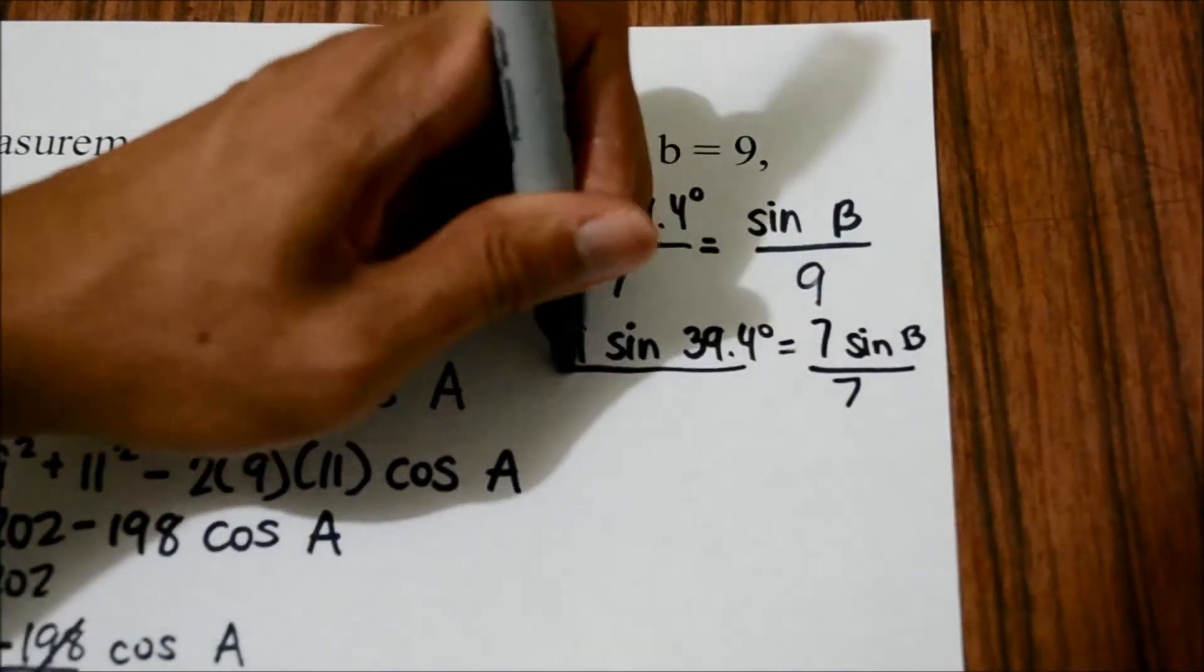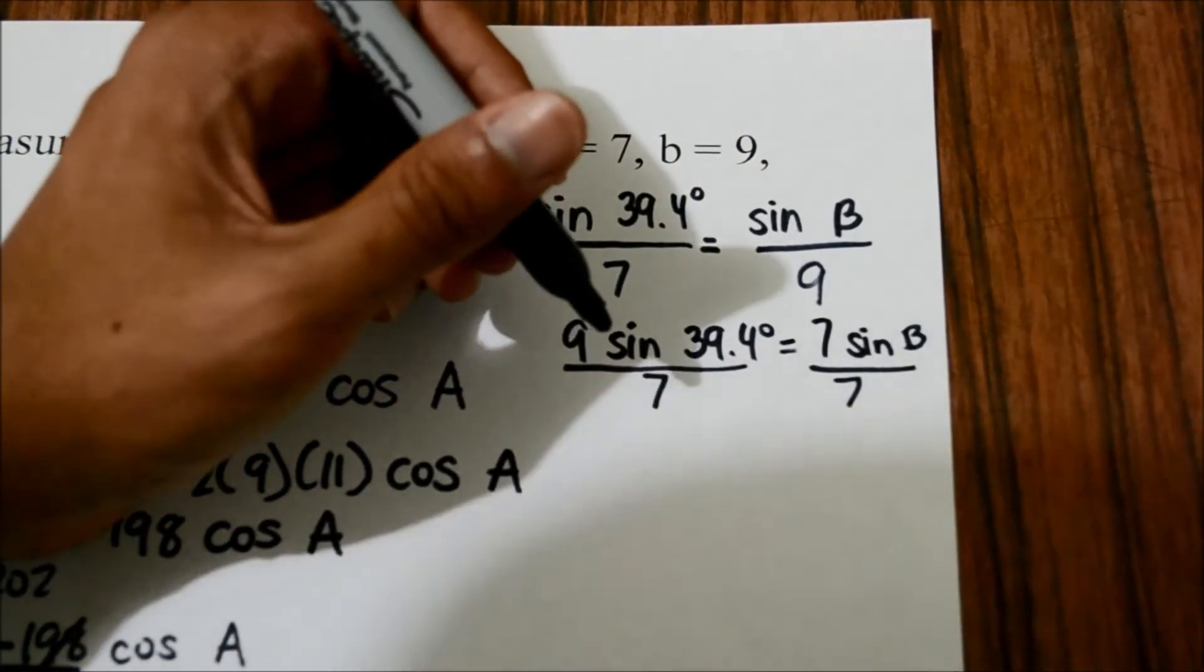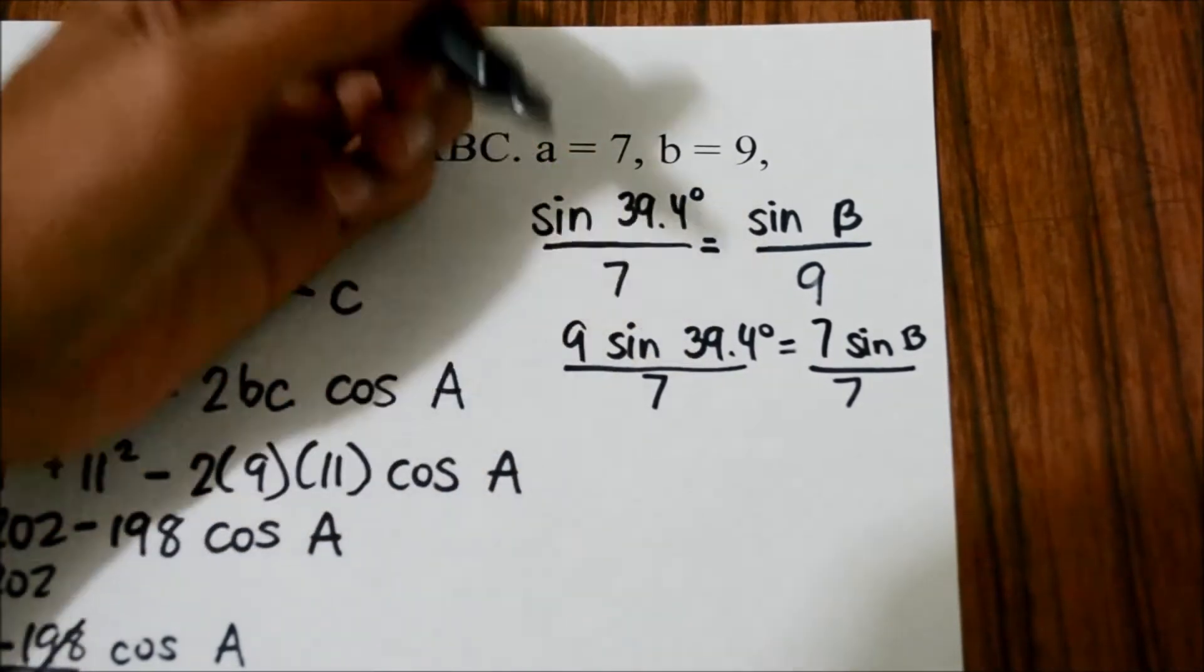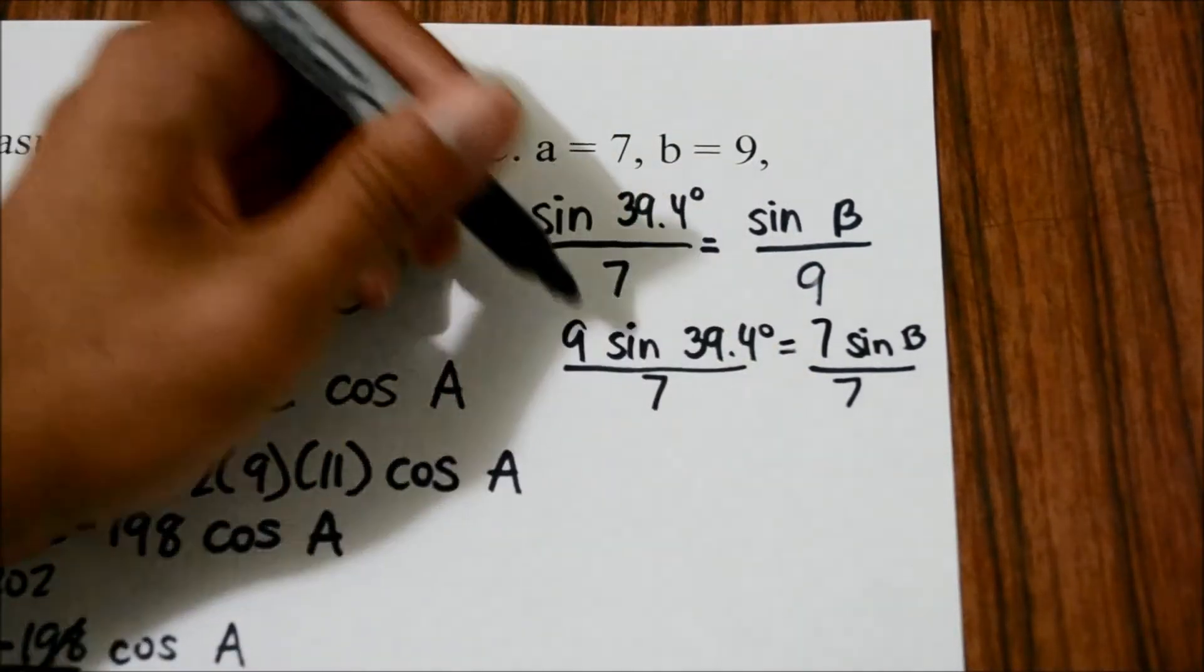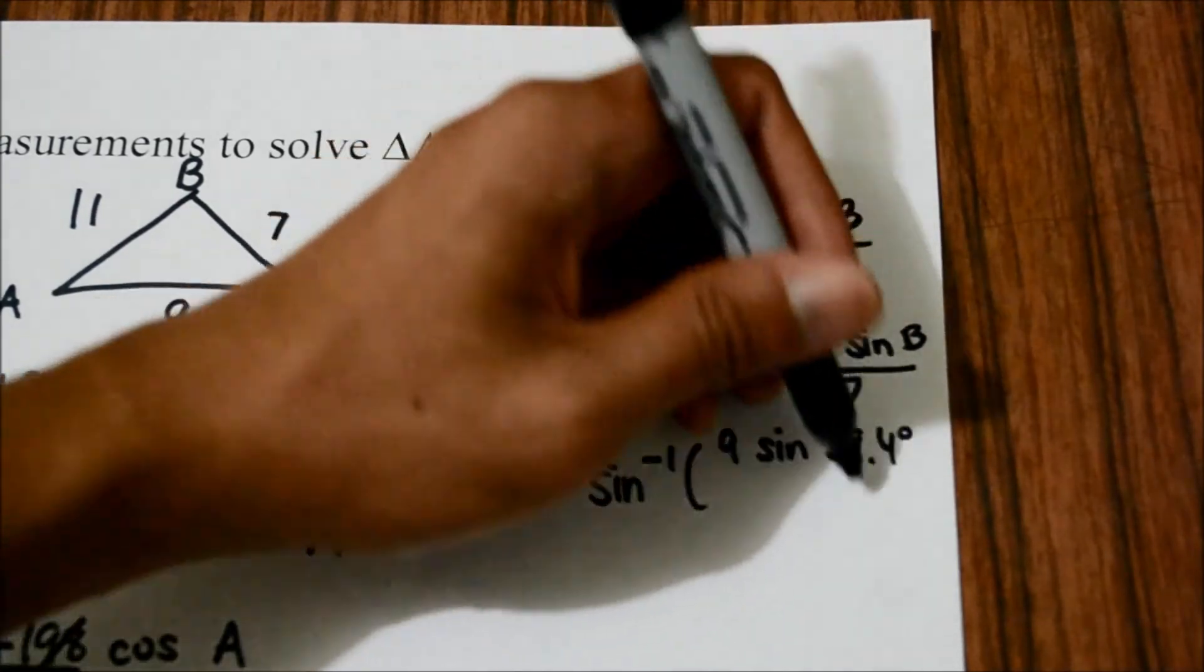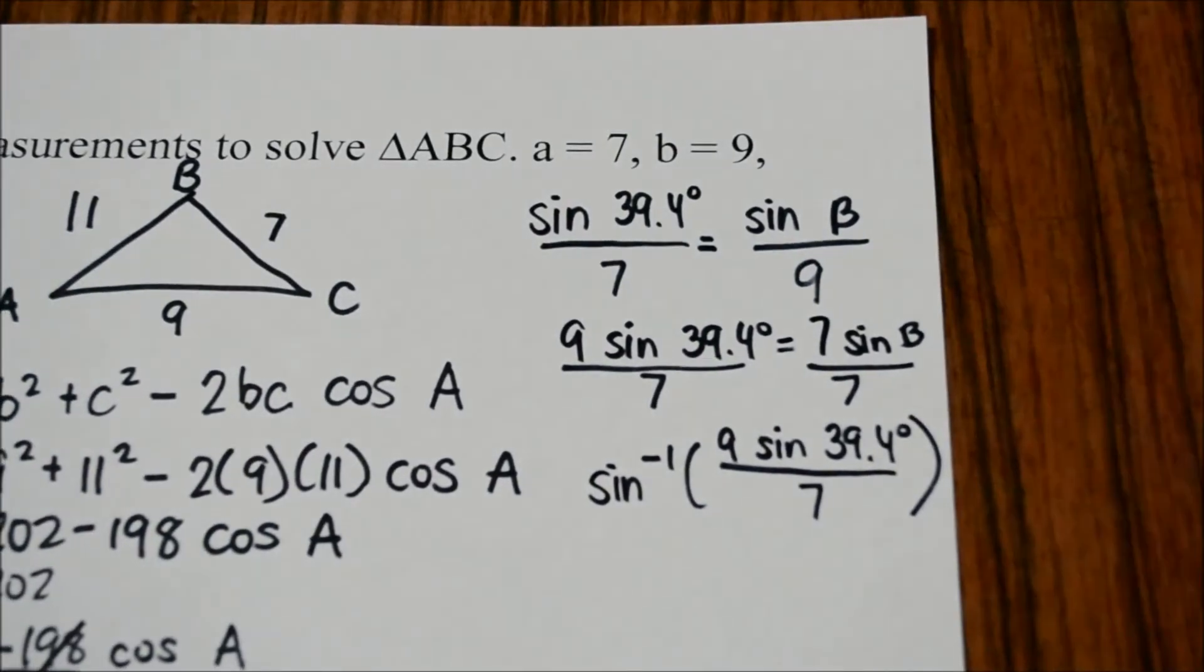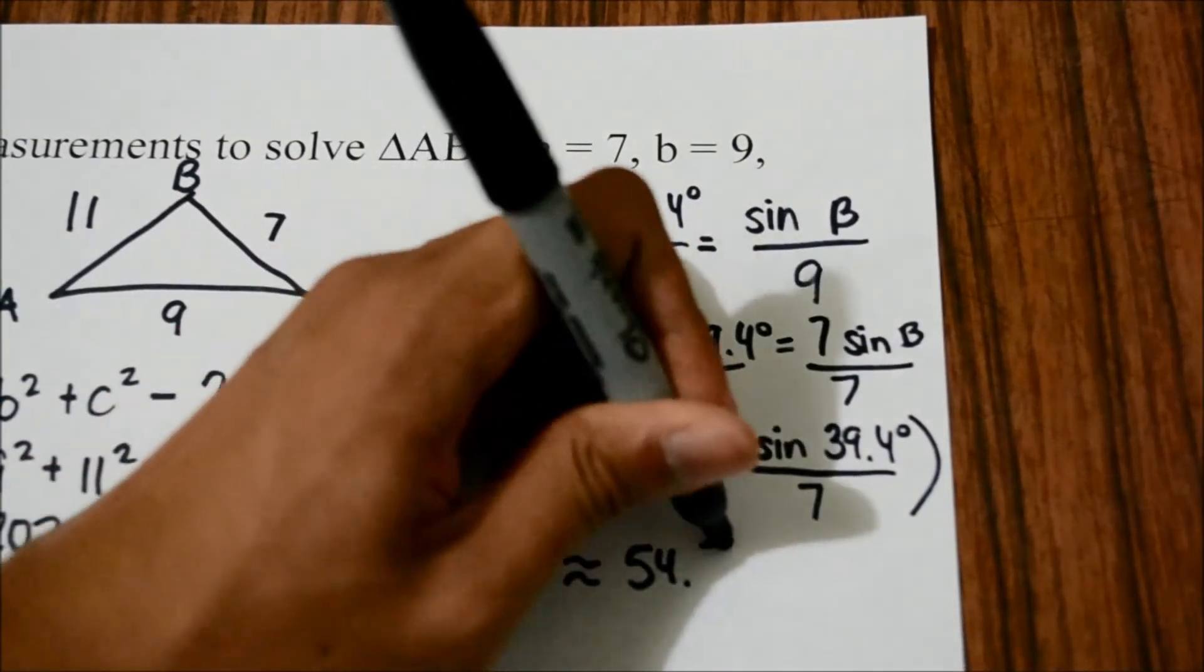We divide 7 on both sides and we would get a decimal number in which we can use the calculator again to find the angle of B. Now this time we are using the inverse sine of the result of 9 times sine of 39.4 degrees over 7. We will have the angle of B rounding to the nearest tenth is 54.7 degrees.